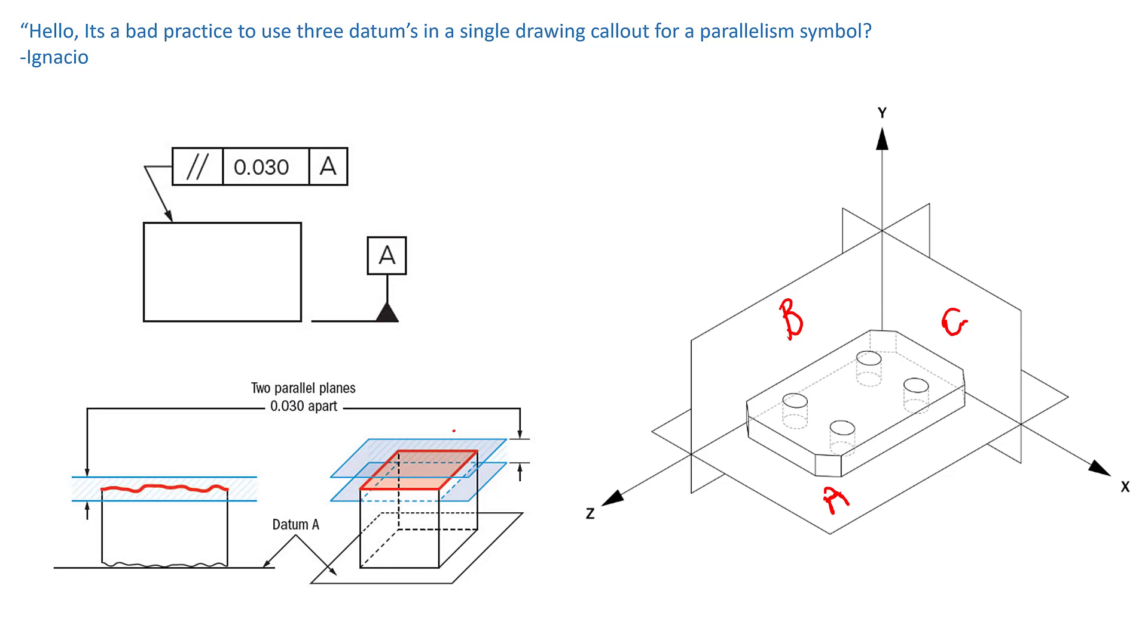But now let's move over to feature of size. This part that's sitting in this DRF has four holes. So let's say that the holes had a parallelism call out back to A. So let's scratch this part out here, but we'll use the datum reference frame. And we'll put in here a diameter symbol, because it is going to be a feature of size that we're controlling here. So we have A, and on this one, let's change A.